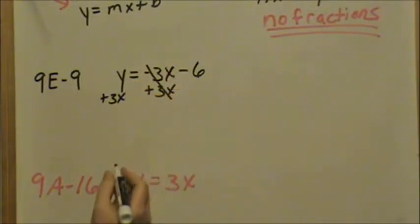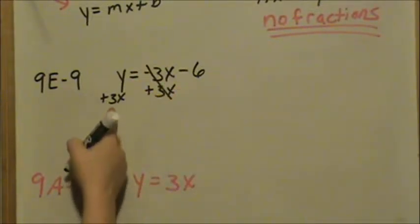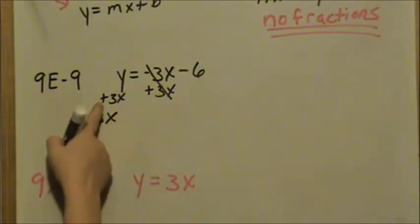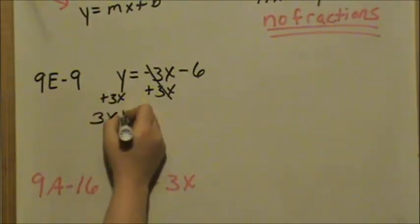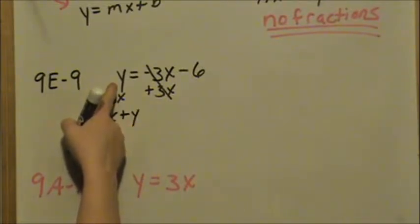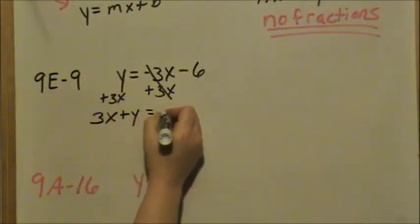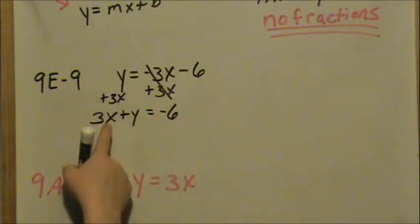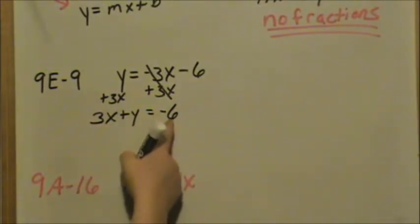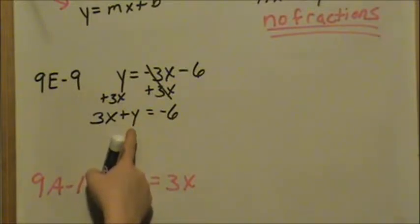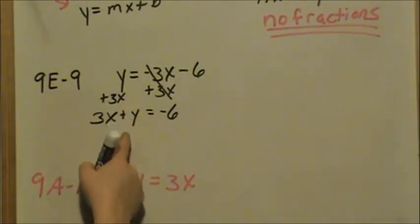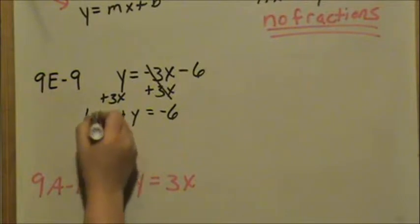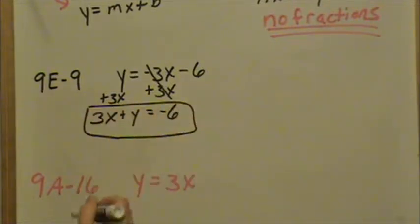On the right, the 3x's cancel out, and on the left I cannot add x's to y's. So I write 3x — when there's no sign, it already implies a positive. So 3x plus y, that y is already positive, equals negative 6. This is standard form: x's and y's on the same side, whole numbers on the other side. Remember, the coefficient in front of this y is like a 1 — we just don't write it. 3x plus y equals negative 6. That is standard form, no fractions.